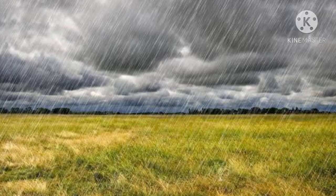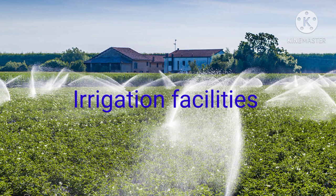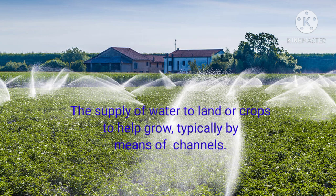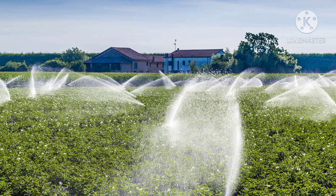So students, to reduce our dependence on rain, we need irrigation facilities. What is irrigation? The supply of water to the agricultural land to grow crops, typically by means of channels, is called irrigation. I hope you have understood about irrigation. India has the largest irrigation facilities in the world.